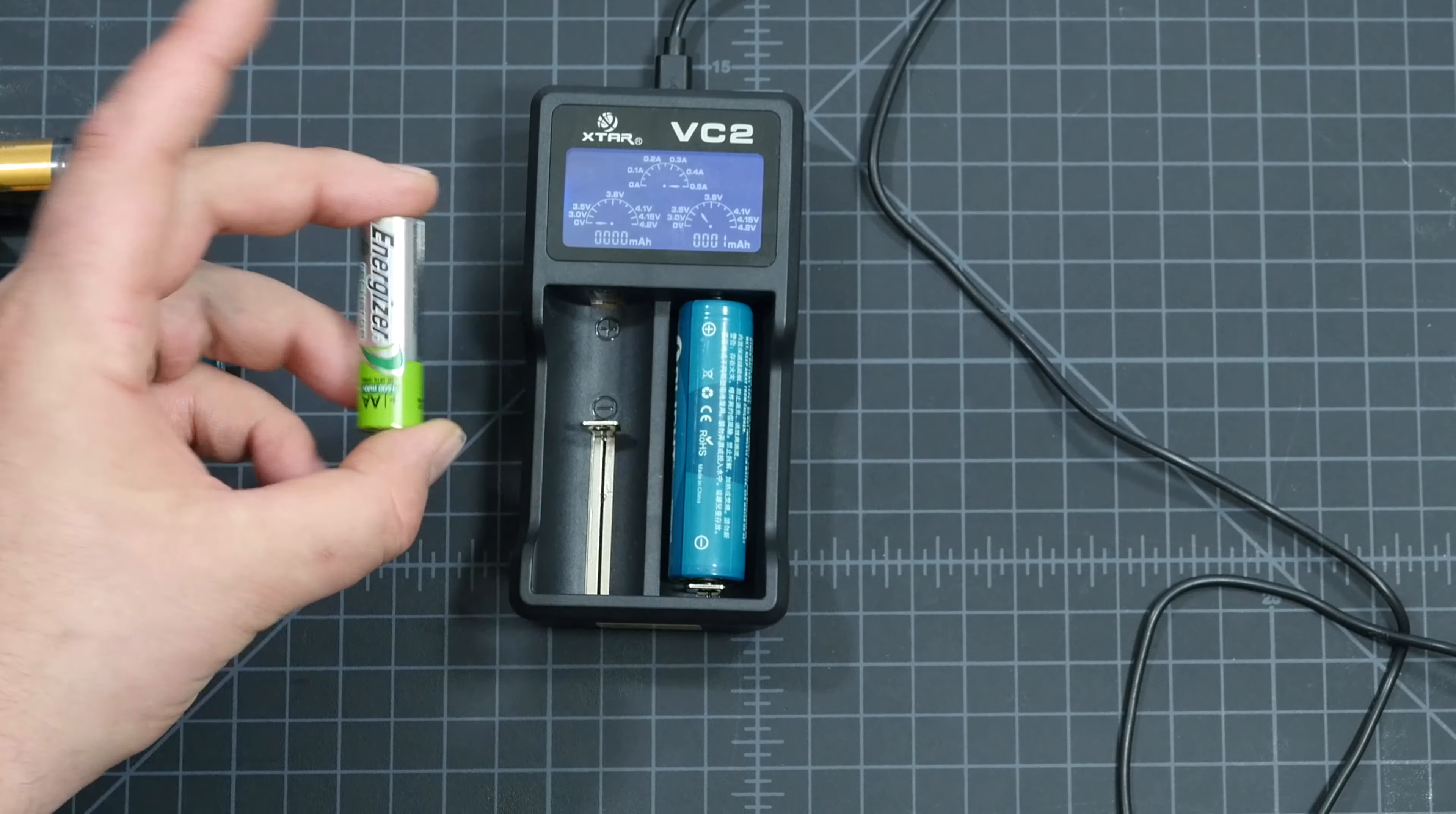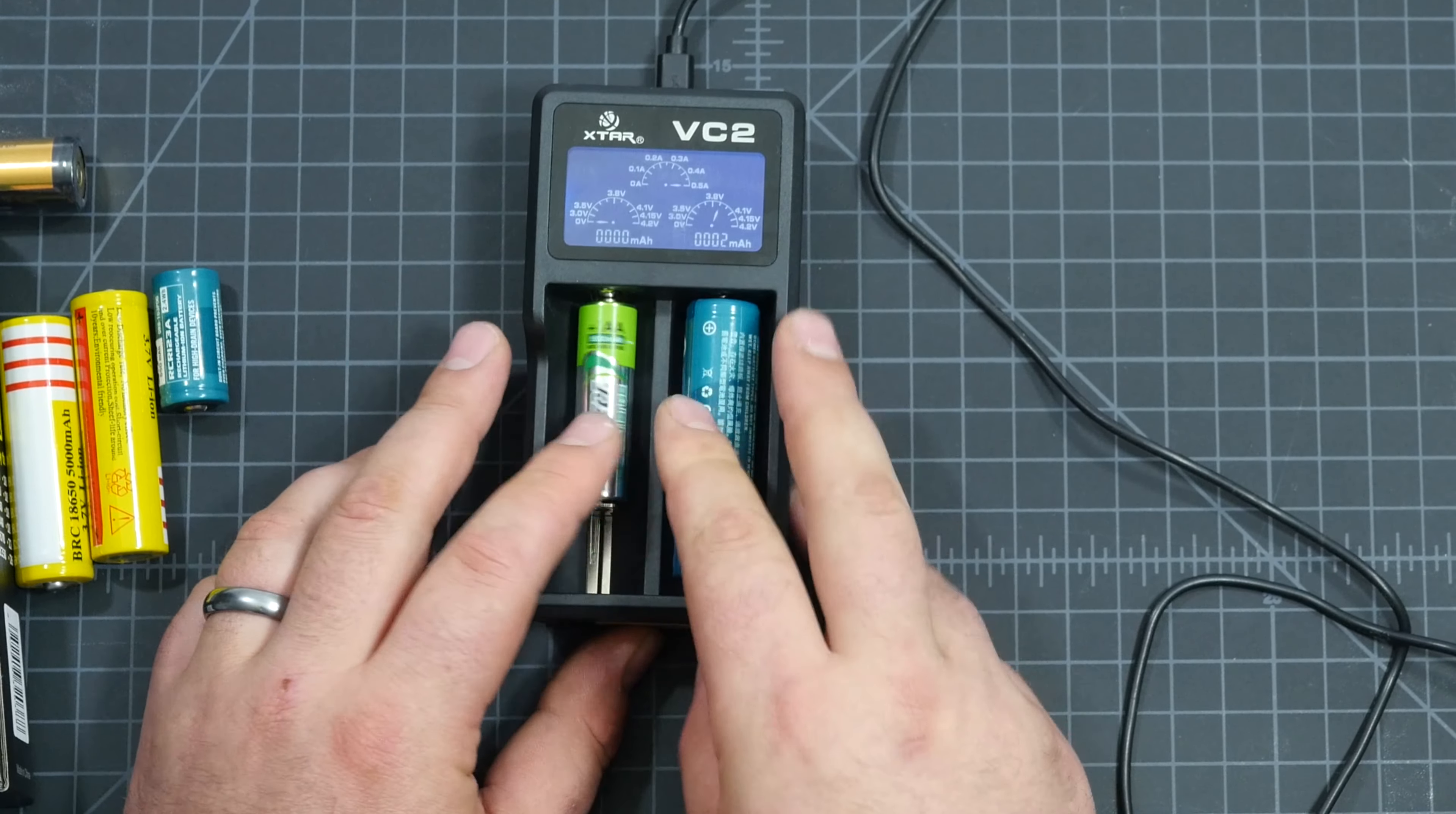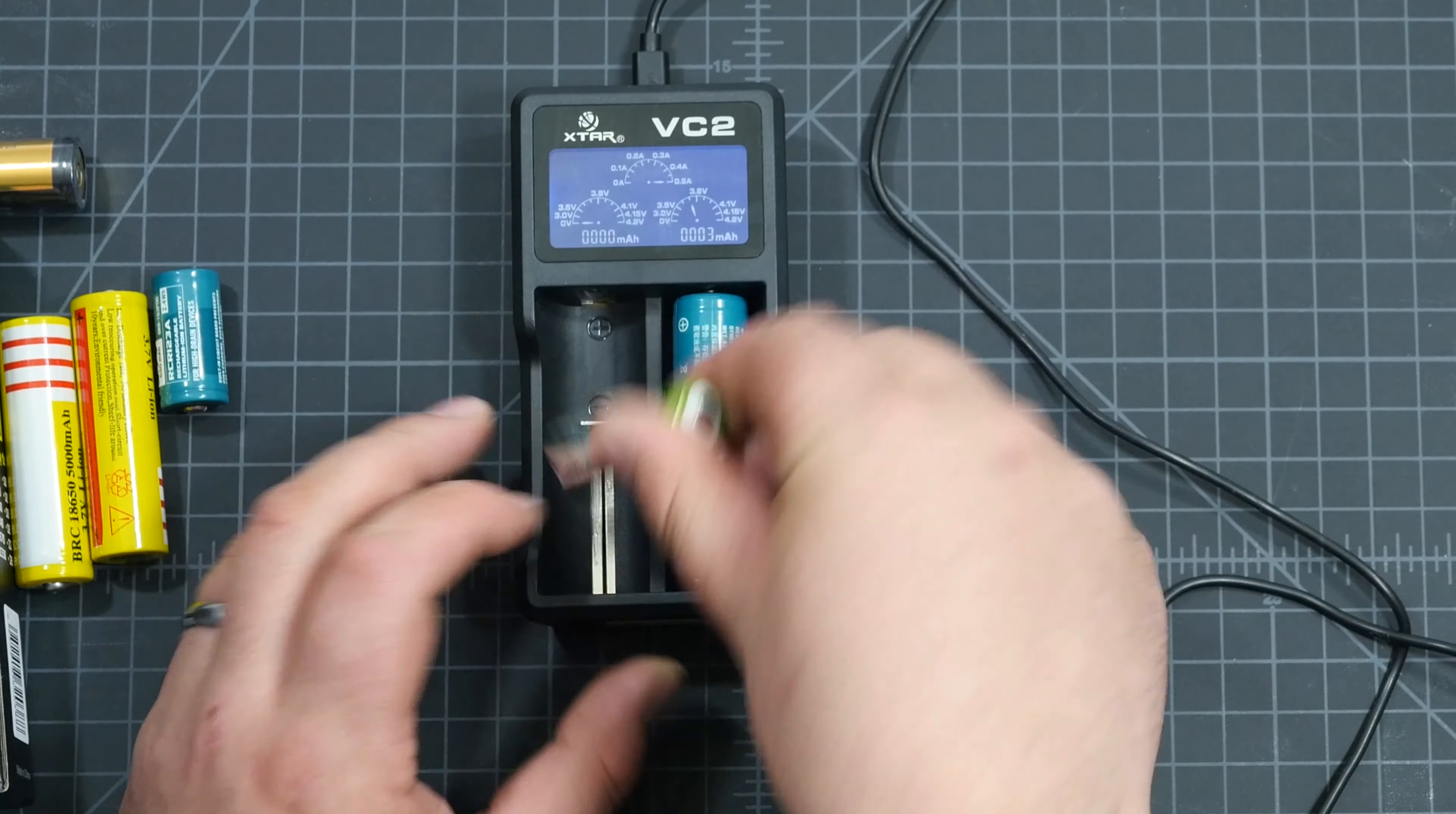Now like I said, this doesn't do triple A's and double A's, but you don't have to worry. If you don't know if they go in there, I'll put it in there. It won't charge it, but it's not going to ruin the battery either.